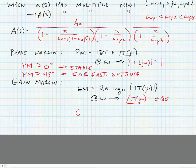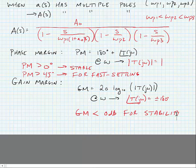We want the gain margin to be less than 0 dB for stability. We're going to look at starting to do compensation in op amps in the next set of notes. Thank you.